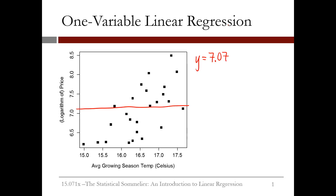The equation for this flat line is y = 7.07. This linear regression model would predict 7.07 regardless of the temperature. But it looks like a better line would have a positive slope.